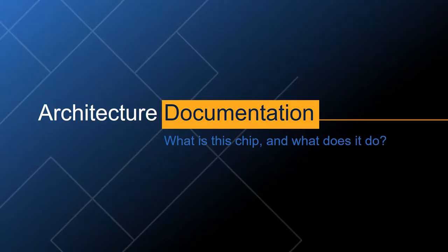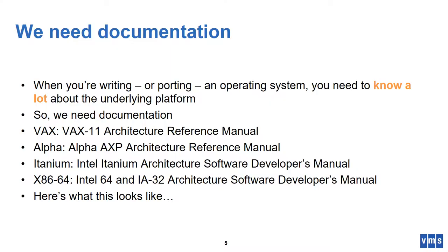When you're writing or porting an operating system you need to know a lot about the underlying platform, so you need documentation to learn about these platforms. For the VAX what you needed was the VAX 11 Architecture Reference Manual. For Alpha you needed the Alpha Reference Manual. For Itanium you need the Intel Itanium Architecture Software Developer's Manual, and for x86 you need the Intel 64 and IA-32 Architecture Software Developer's Manual, which is a mouthful.